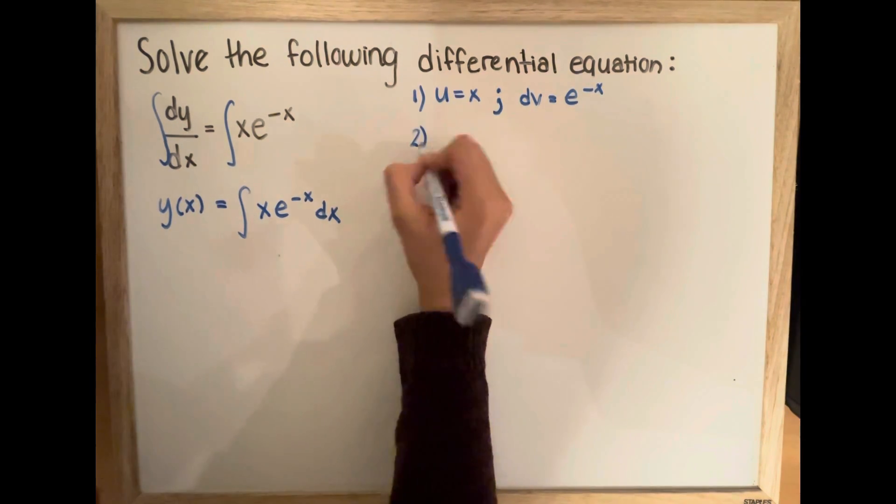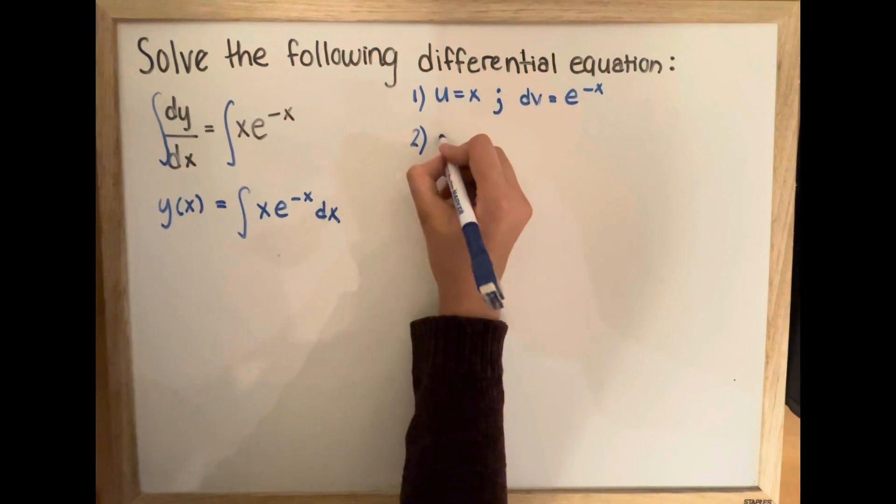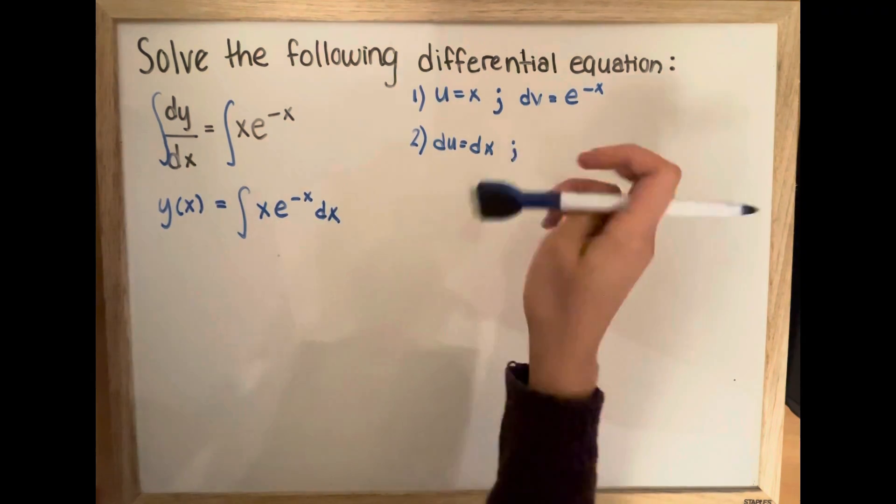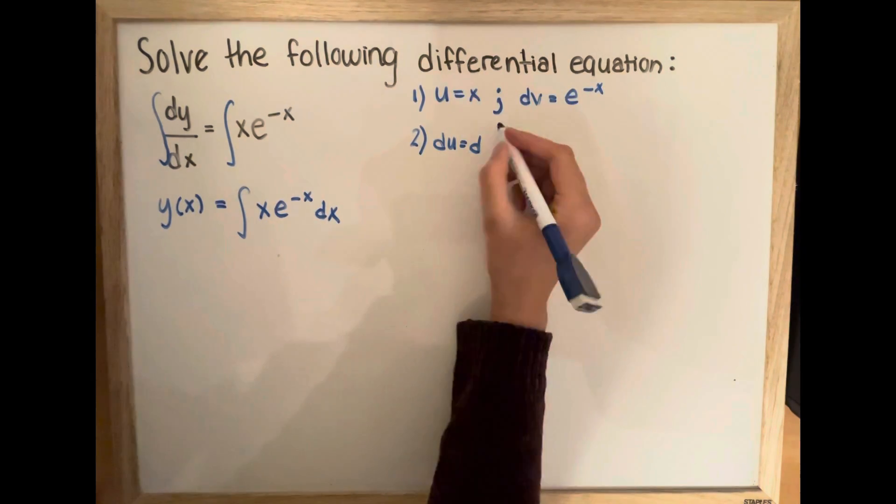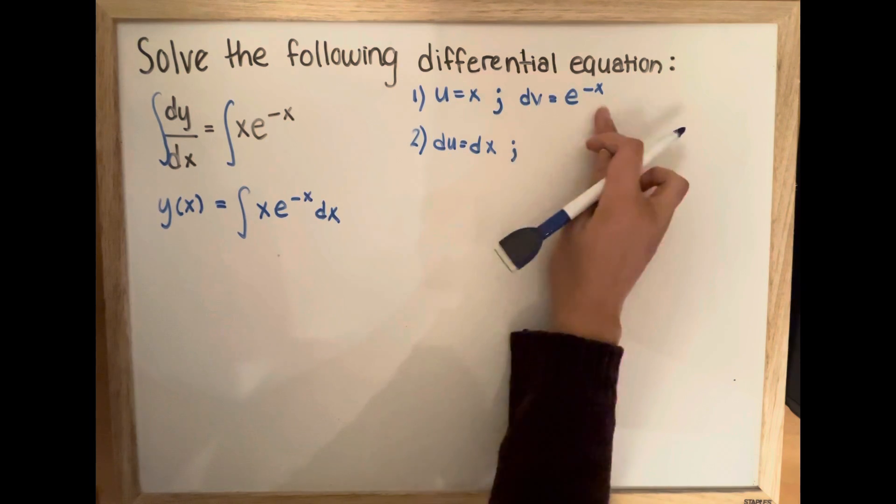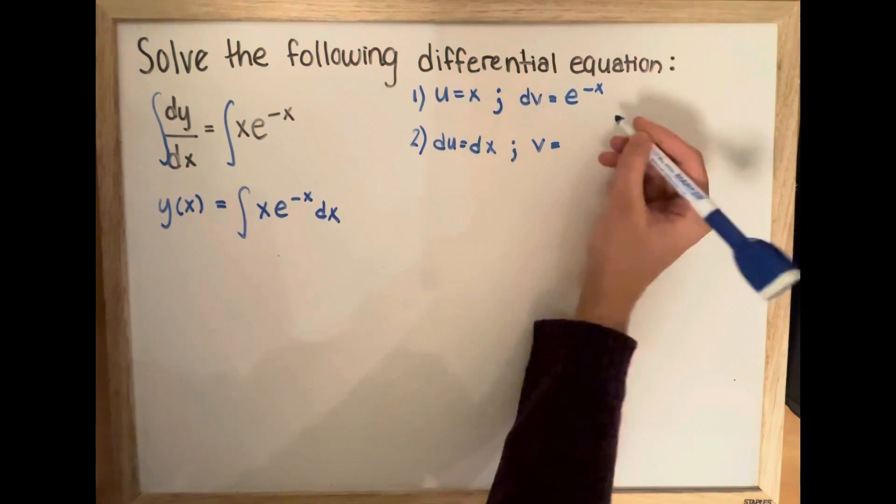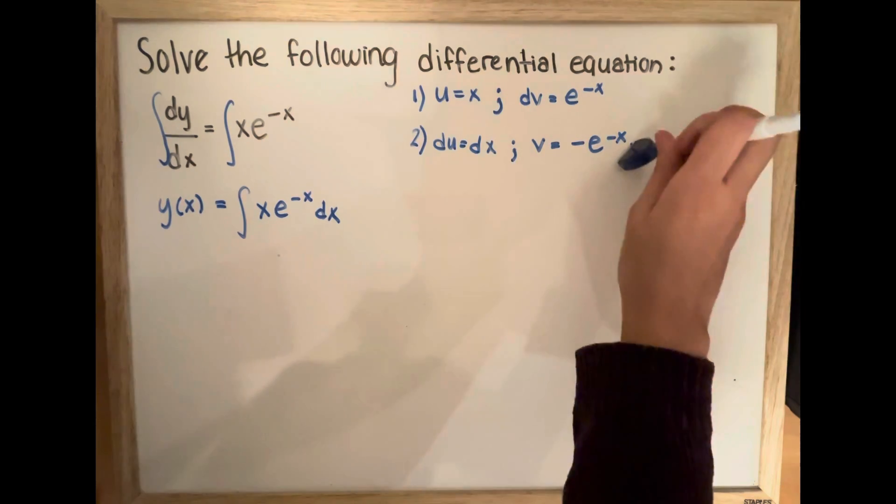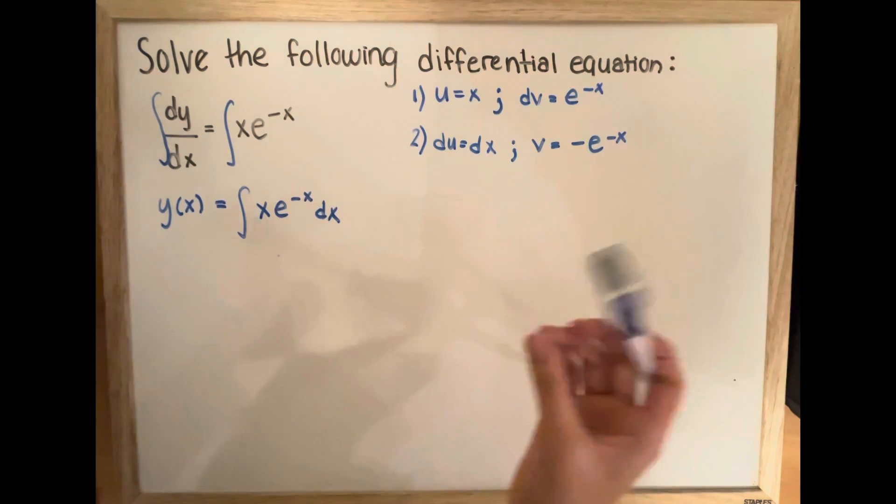So step two, we're going to take the derivative of this, du is equal to dx, and we're going to take the integral of this. So we're going to have v is equal to negative e to the power of negative x. So now,